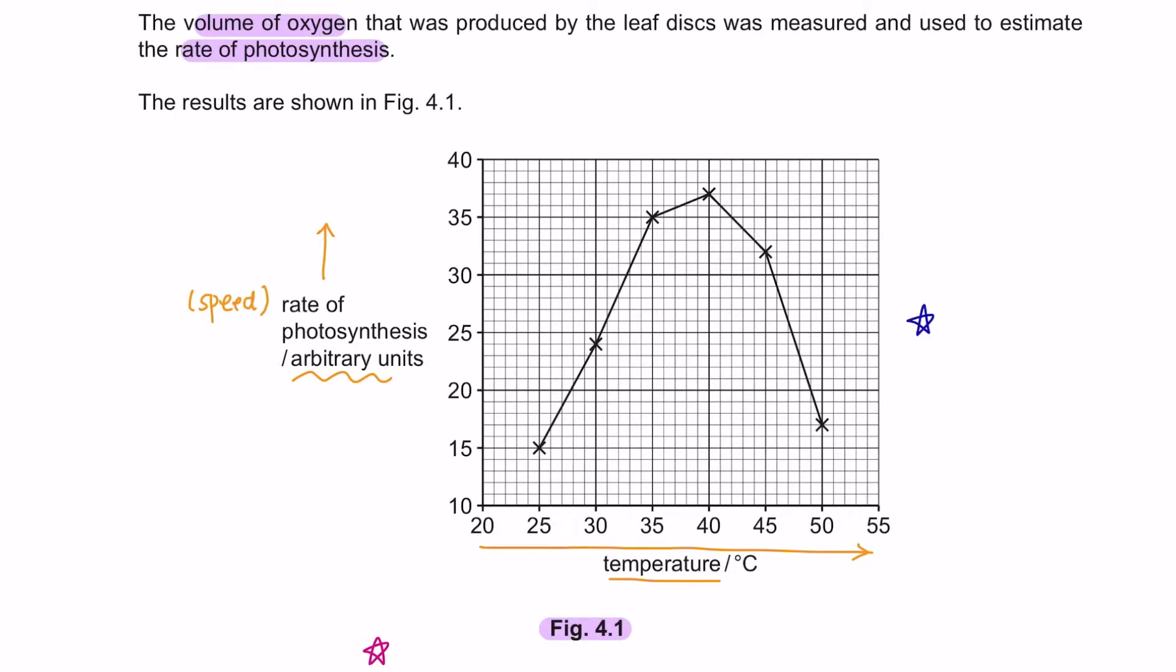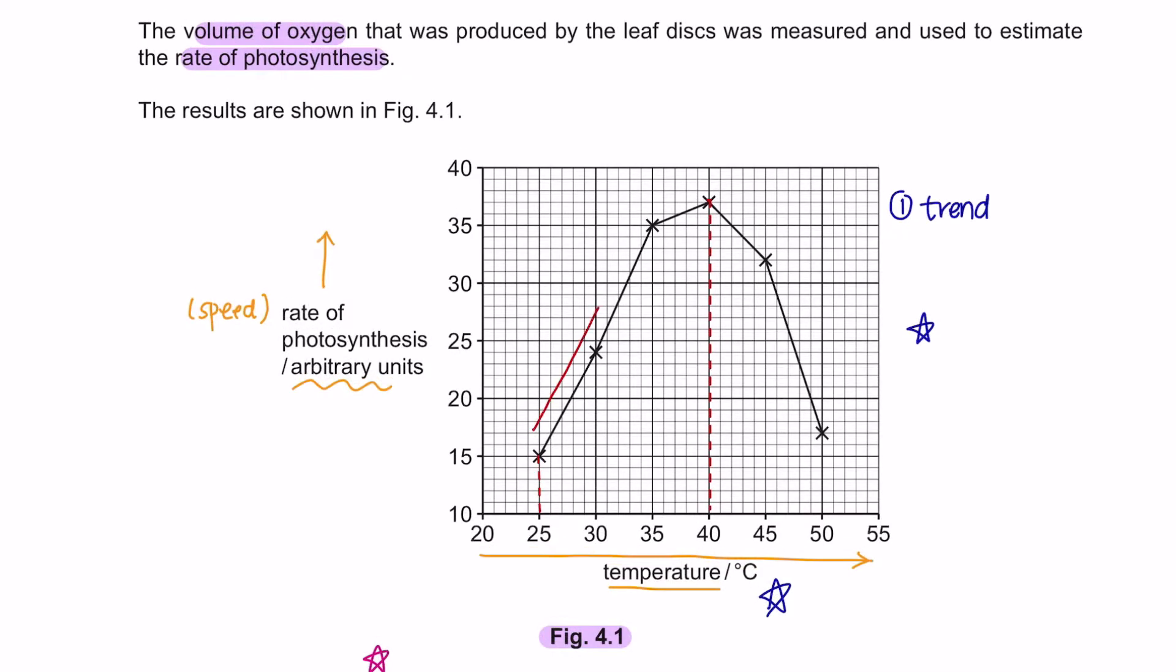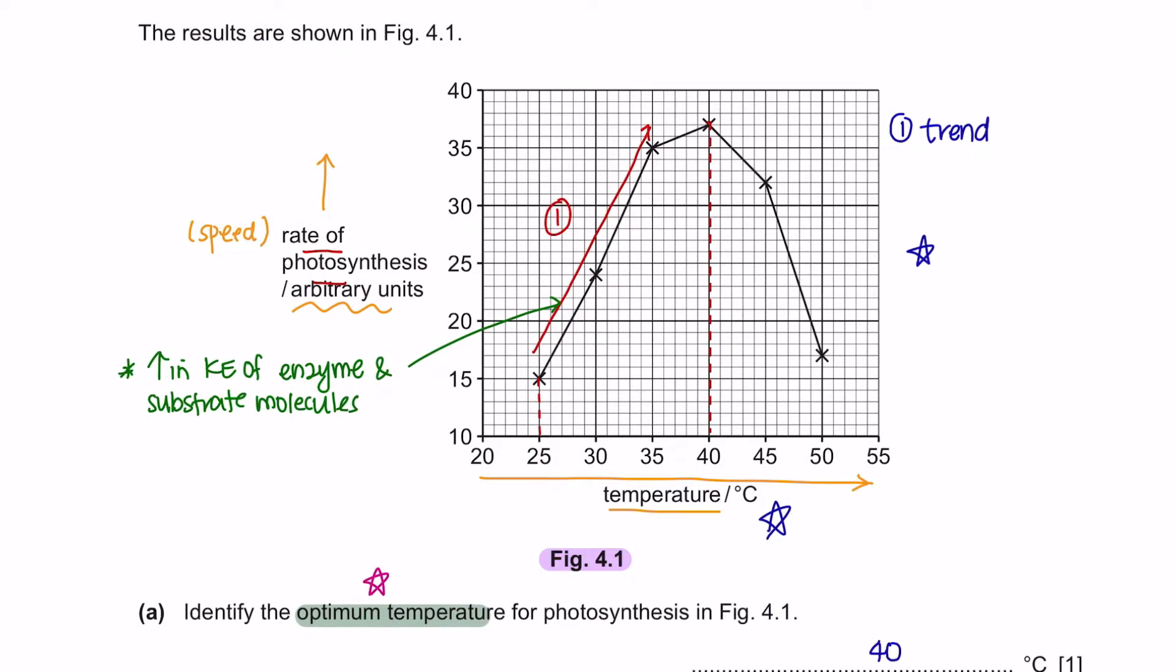When asked to describe a graph, we can talk about the trend at different temperatures. As the temperature increases, the rate of photosynthesis increases as well. This is because there is an increase in the kinetic energy of the enzyme and substrate molecules involved in photosynthesis. As the molecules move faster, more successful collisions occur between them which speeds up the rate of photosynthesis. This trend continues until the optimum temperature is reached and any further increase in temperature will lead to a decrease in the rate of photosynthesis. This is because the enzyme starts to denature.